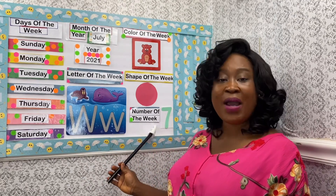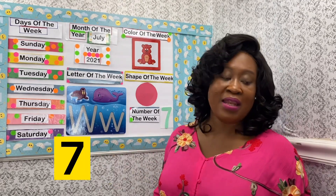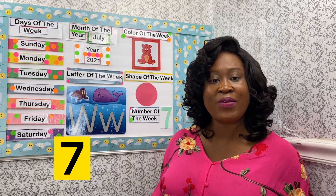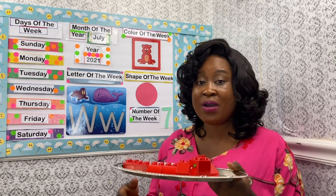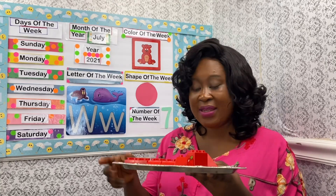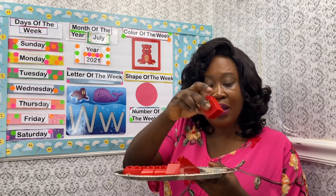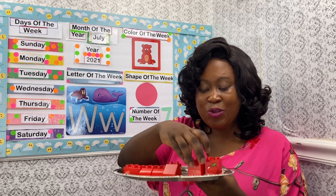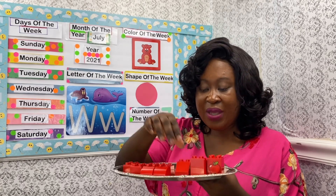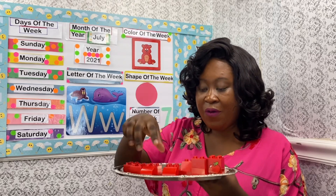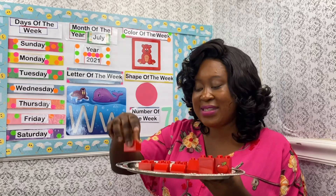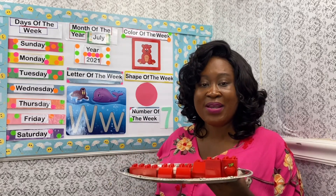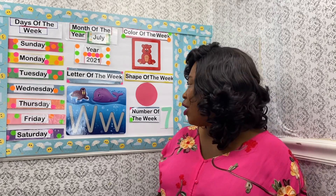The number is seven. Let's count our seven blocks. I brought my counting tray — are you ready to count along with me? Great! Now let's start: one, two, three, four, five, six, and seven. We have seven blocks! Great counting, great job!